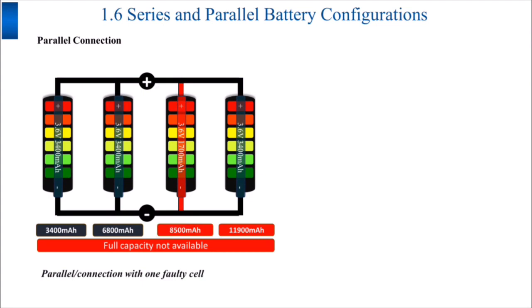So now the next topic is parallel connections with faulty cells. In this figure, you can see there is one bad cell, cell number three, which has bad cell characteristics.